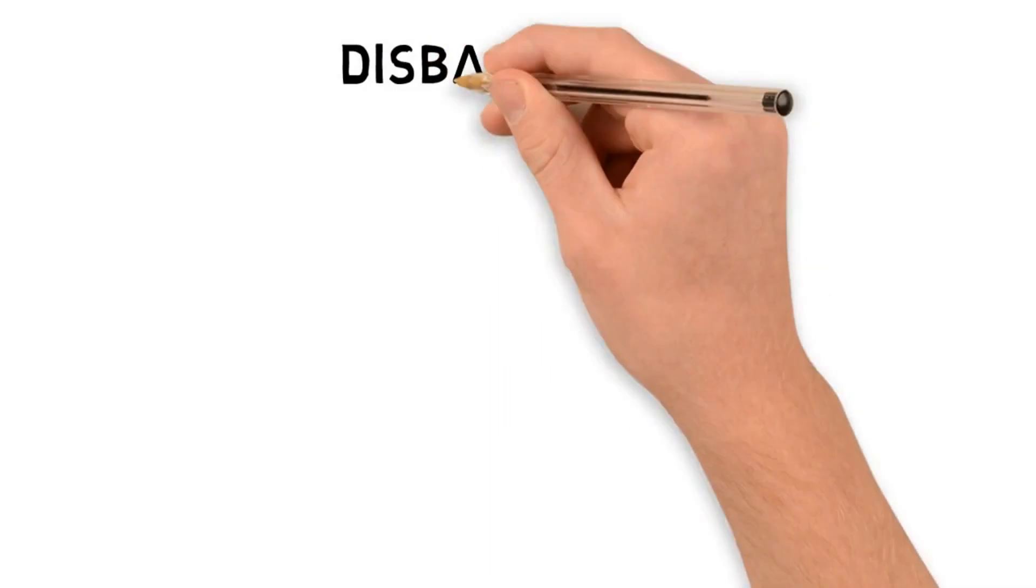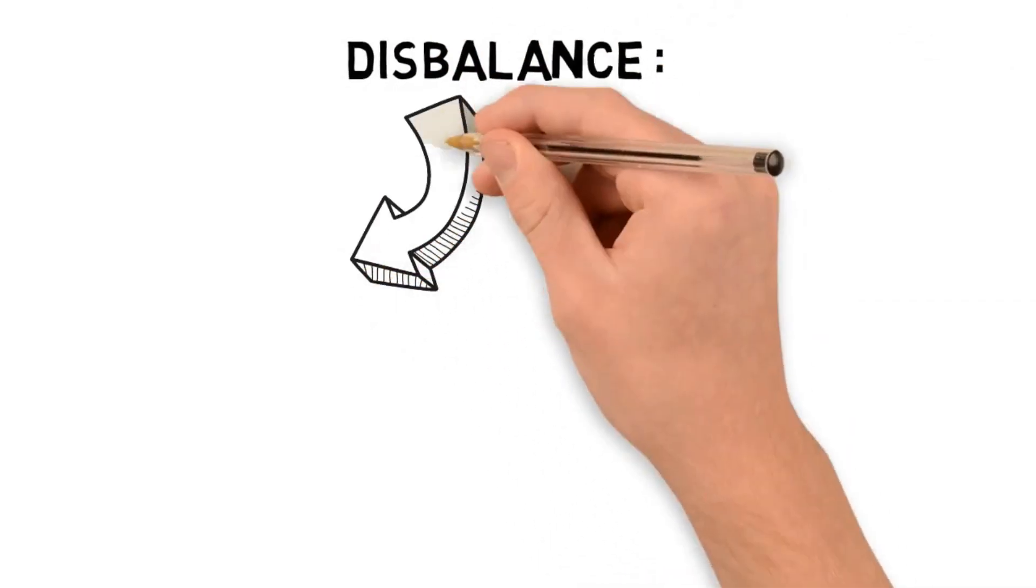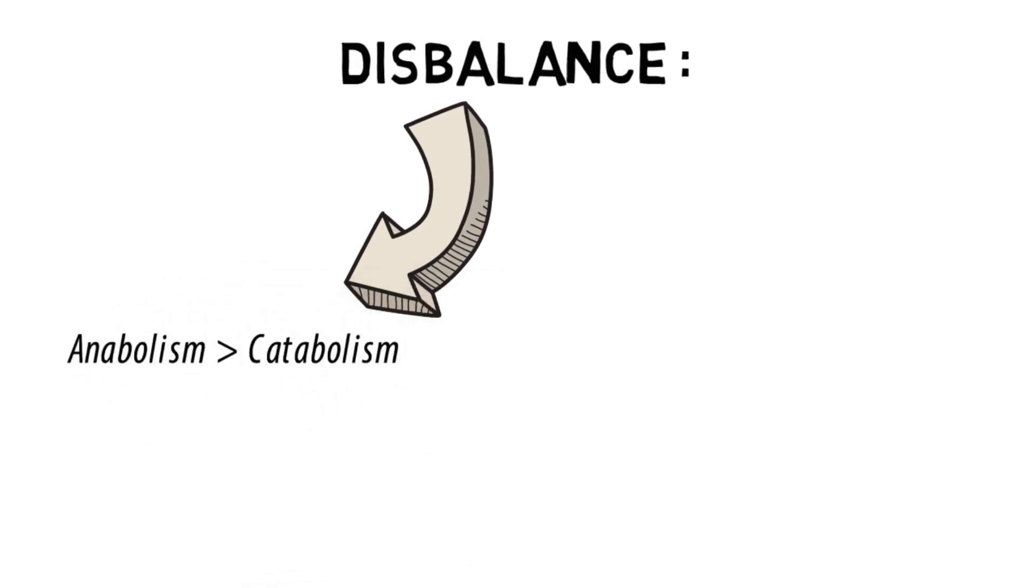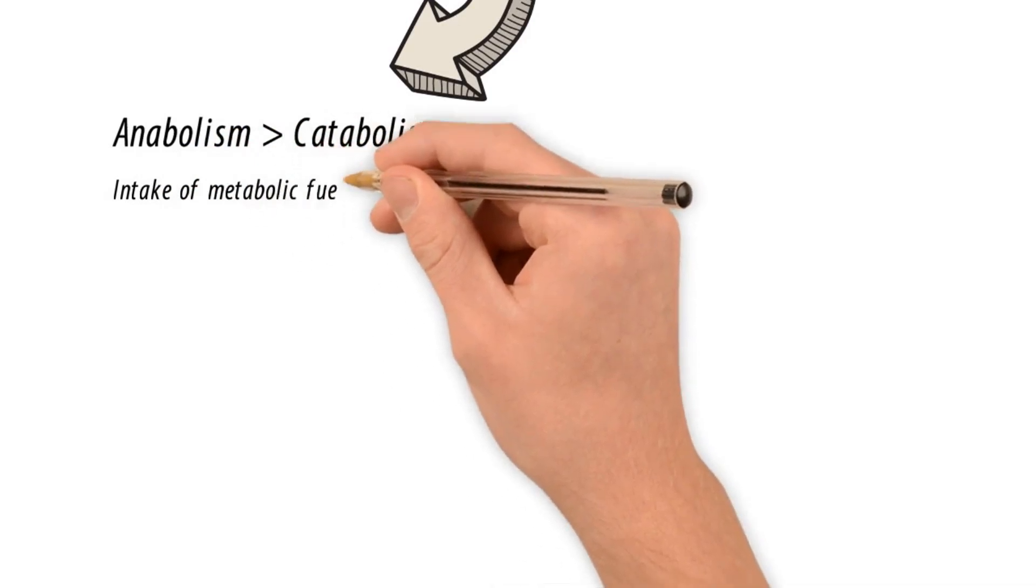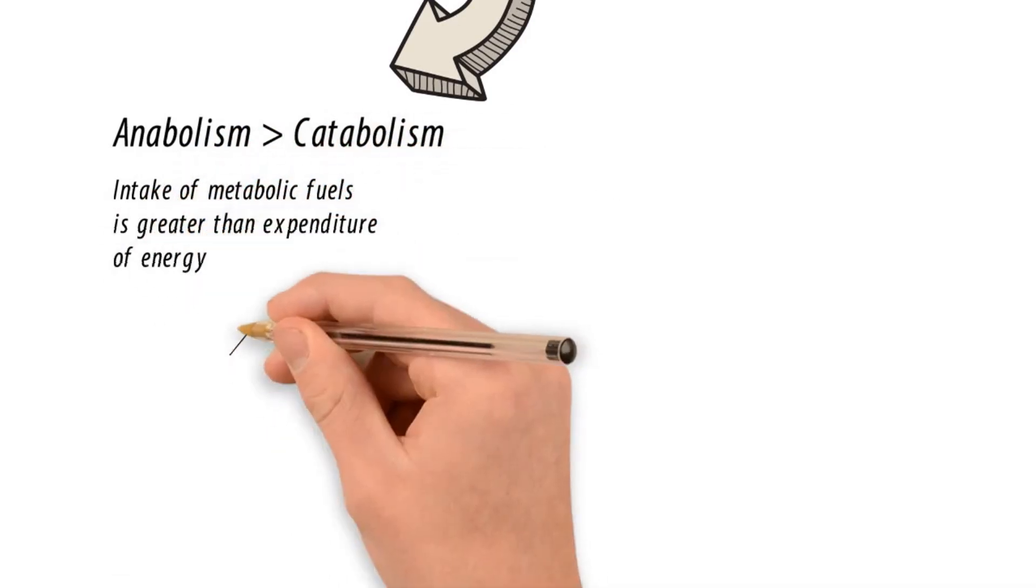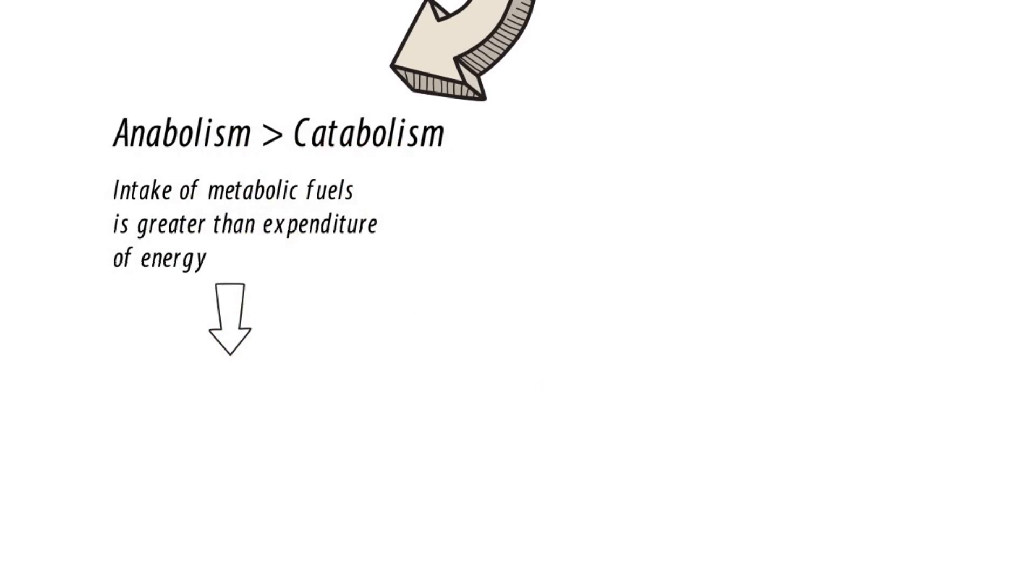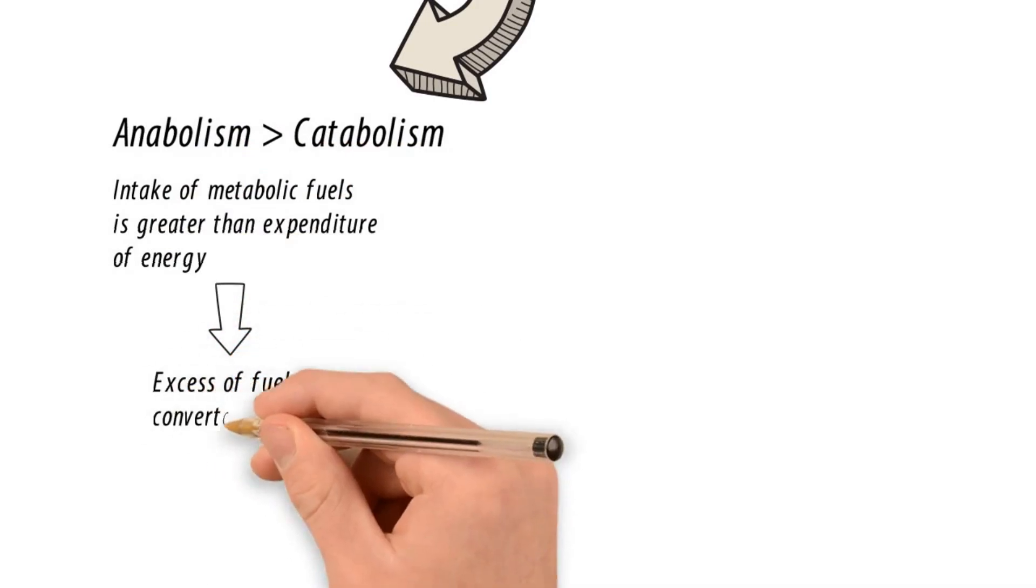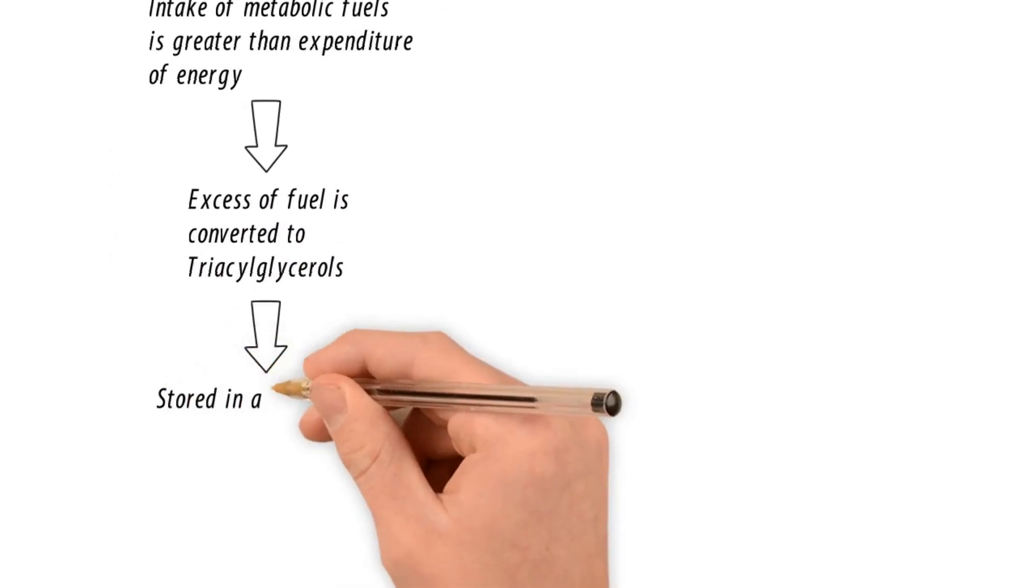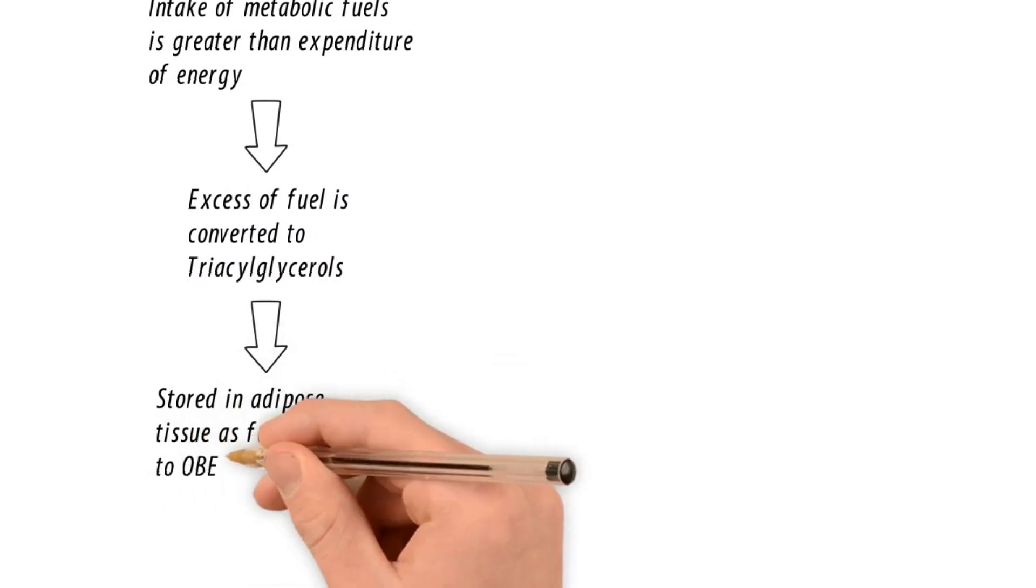Now, let us see what happens if either of them becomes more or less. In the first case, let us assume anabolism is greater than catabolism, which happens mainly when we intake metabolic fuels more than expenditure of energy. In that case, the excess of fuel is converted into triacylglycerols and is stored in adipose tissue as fats leading to obesity.